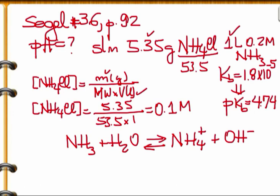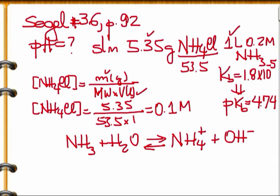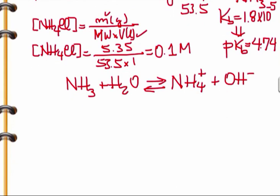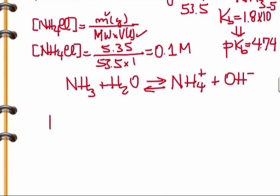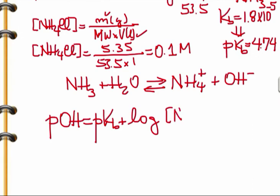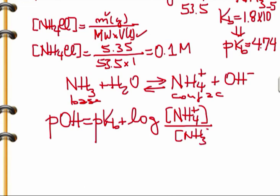We use the Henderson-Hasselbalch equation as pOH equals pKb plus log of the concentration of the conjugate acid over the base. The conjugate acid is NH4 plus and the base is ammonia.